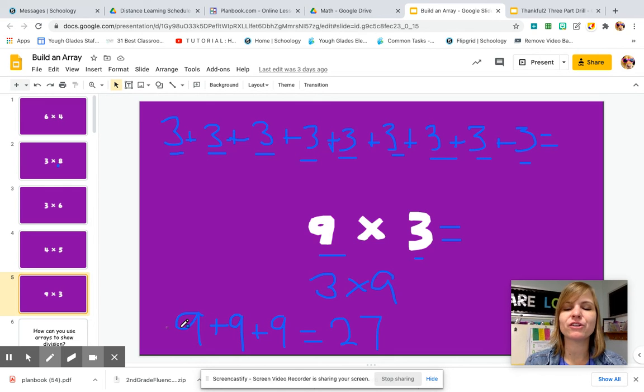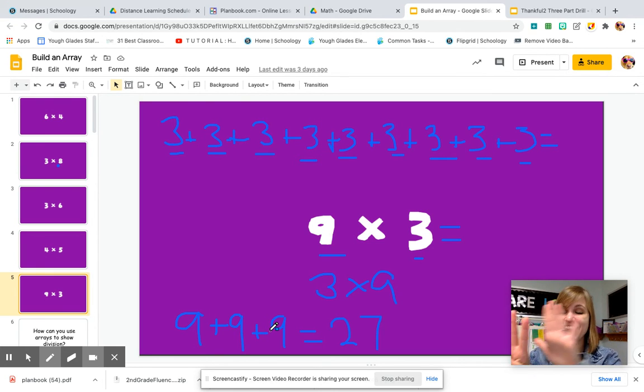Nine plus nine is 18 plus nine more is 27. If you ever get stuck on your adding, remember to add on. Do your doubles first. Nine plus nine is 18. Add on nine. So I would go 18, 19, 20, 21, 22, 23, 24, 25, 26, 27. There's my nine. Here's my nine. And I got 27.